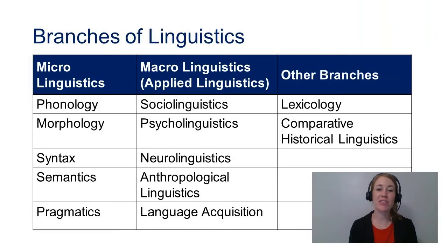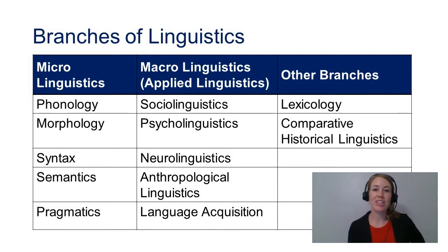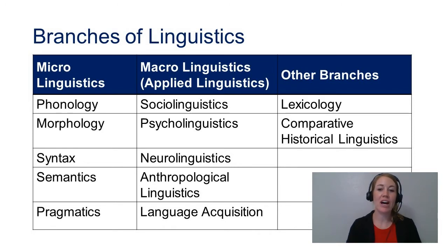A quick summary of the fields of linguistics. These are the five core areas of language that linguists like to explore, listed here in the left column on the slide: phonology, morphology, syntax, semantics, and pragmatics. These are called the five pillars. And through our work this semester, you'll actually get a taste of each of them.